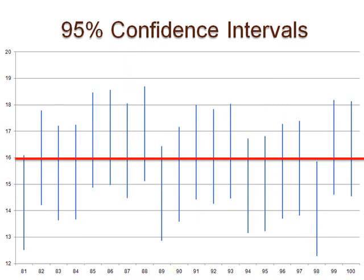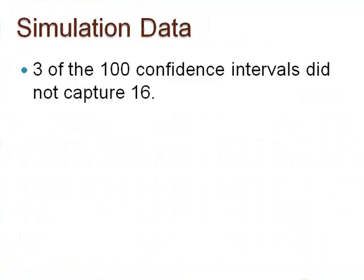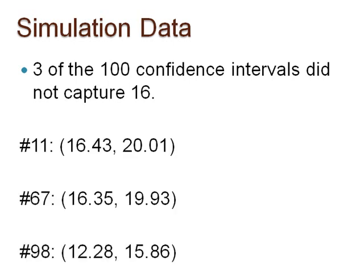Pause again to compare this number with your estimate. Did you count that 3 of the 100 intervals did not capture 16? Those confidence intervals were from samples numbered 11, 67, and 98. Just so you know, sample 23 was close, but it did capture 16. Please rewind to view the graphs again if you did not see this.